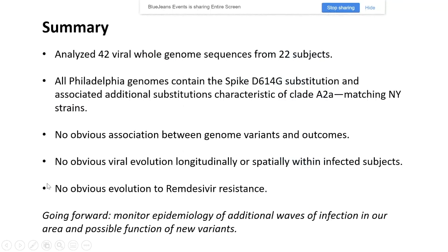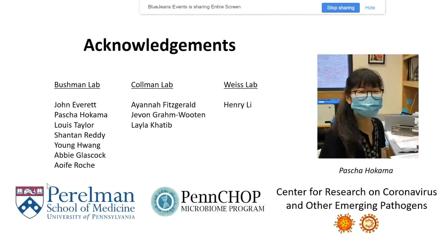In summary, we analyzed 42 viral whole genome sequences from 22 subjects. All the Philadelphia genomes contain the spike D614G substitution and associated additional substitutions characteristic of clade A2A, which matches the New York strain clade. There were no obvious associations between genome variants and outcomes, no obvious viral evolution longitudinally or spatially within infected subjects, and no obvious evolution toward remdesivir resistance. Going forward, we're going to monitor the epidemiology of additional waves of infection in our area and assess possible functions of new variants that we identify. This is a very large effort, and I'd like to thank everybody involved.